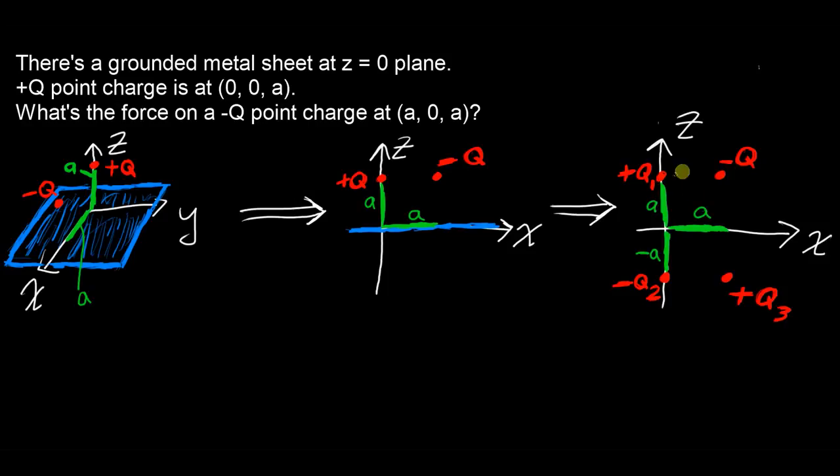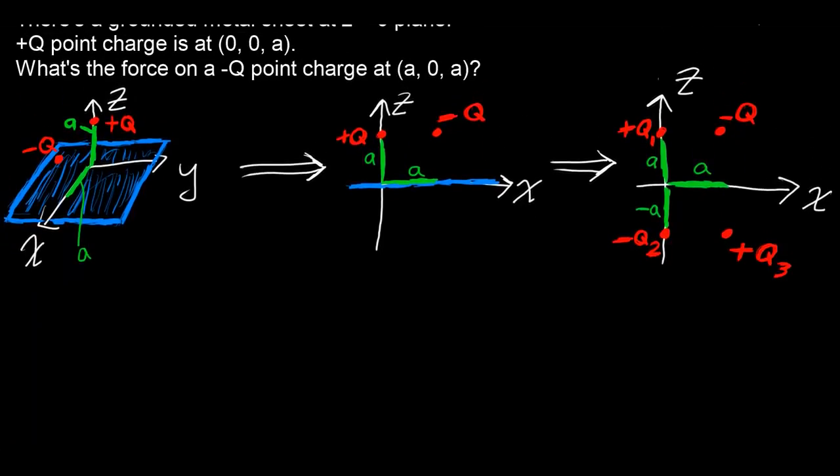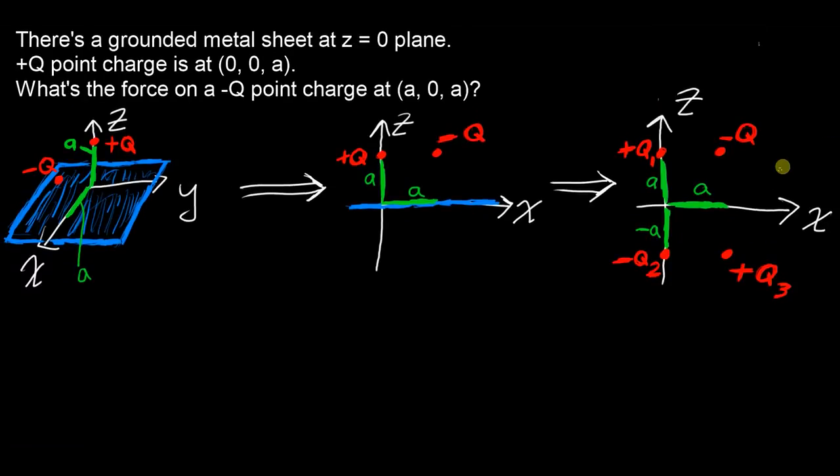Then naturally this point must be located at zero, zero, negative a, which is the opposite of zero, zero, positive a, and this charge must be at a, zero, negative a, which is this thing flipped around the X axis to here. So once you've got that going, the rest of the question is not so bad, once you set it up properly.